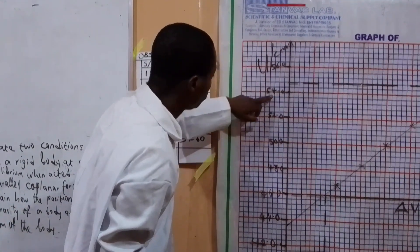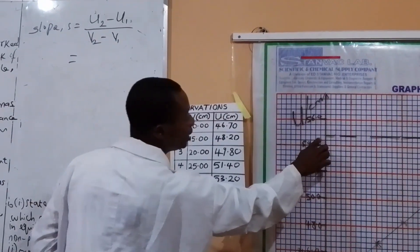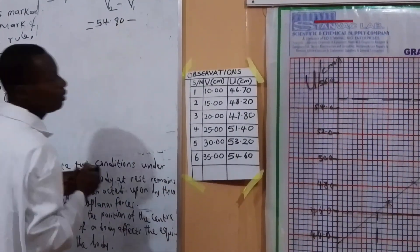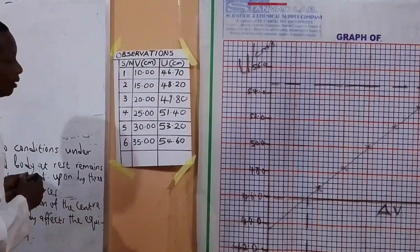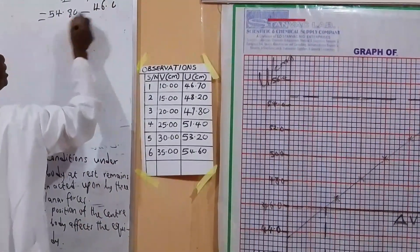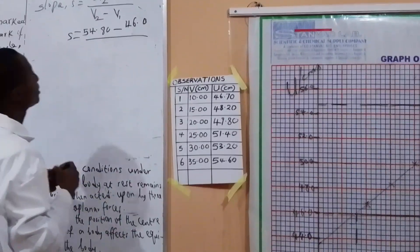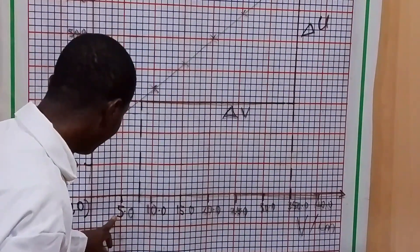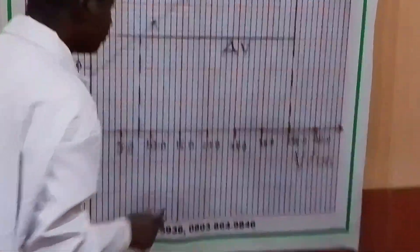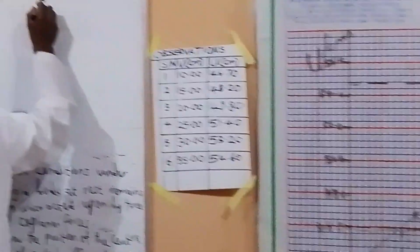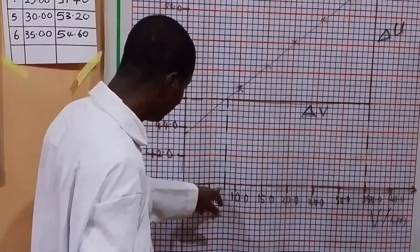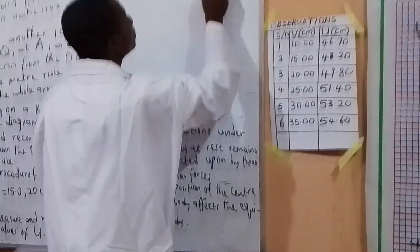U2 is 54.8 and U1 is 46.0. V2 is 35 and V1 is 5. From here to here is 8 divisions — that's 8.0. So at the numerator we have 54.8 minus 46.0 = 8.8. And the denominator is 35 minus 5 = 27.0 — but wait, let me read from the graph: it is 8.0 for the vertical change.